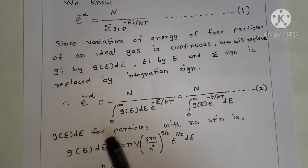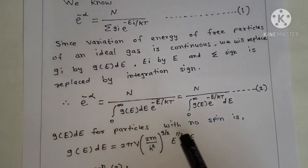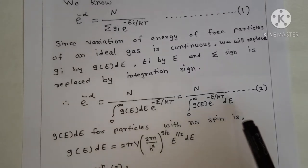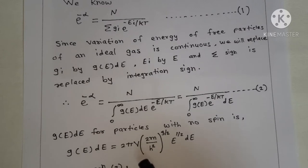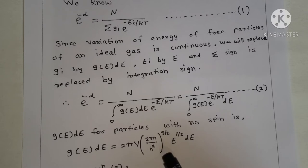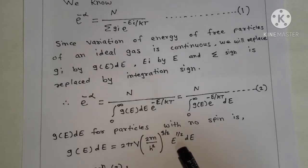So g(e)de for particles with no spin is g(e)de = 2π V into bracket 2m upon h squared raised to 3/2, times e raised to 1/2 de.